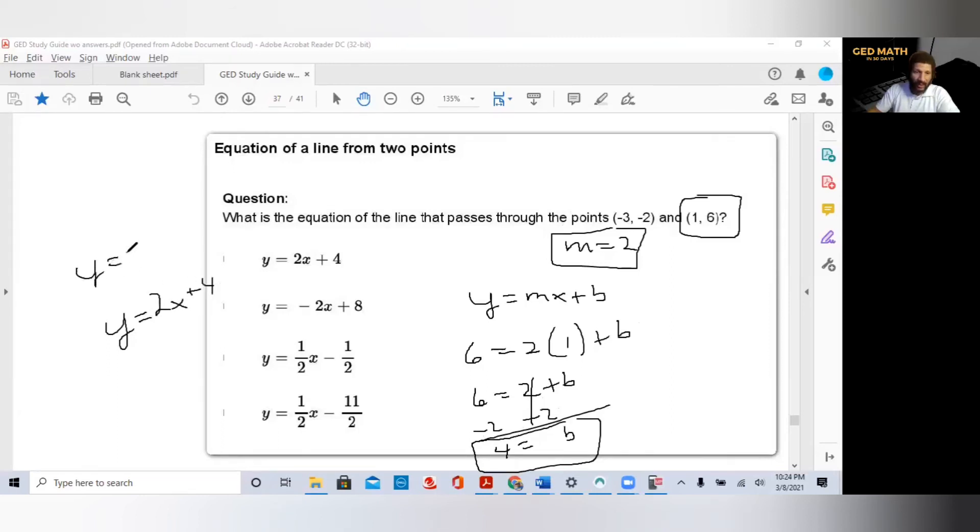So my B is equal to 4, my slope is equal to 2. That means my equation is Y equals 2X plus 4. Because remember, Y equals MX plus B. So instead of M, we're going to put the 2. Instead of the B, we're going to put the plus 4. That's how you solve the slope given two points or an equation of a line given two points, which is a guaranteed problem on your GED exam.